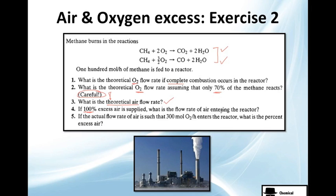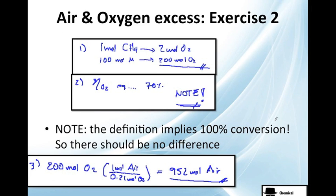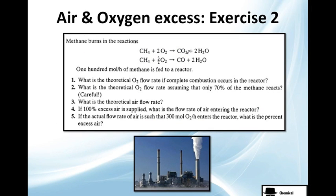100% excess air, how much rate of air? Nice. And if the actual flow rate is 300 mol, what is the percent excess? So let's do it. The first one is so easy. You just need 1 mol of methane per 2 mols of O2, which is here. So if you are using 100 mol of methane, you need 200 mols. Nice. Remember, we are feeding 100 mol of methane.